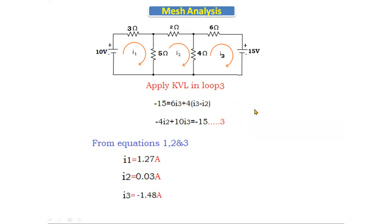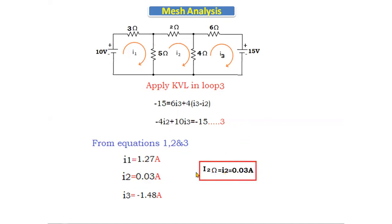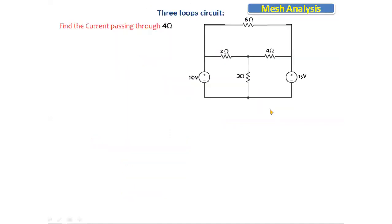The question asks: find the current passing through the 2Ω resistor. Only I2 flows through the 2Ω resistor, so the current is simply I2 = 0.03 amperes. This is the answer. This is the procedure we follow when three loops are present in a given circuit. Now let's look at one more problem.